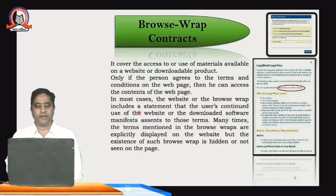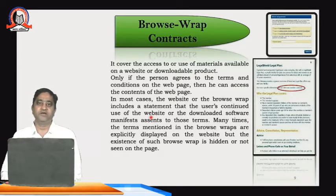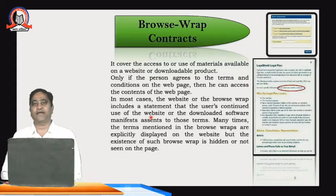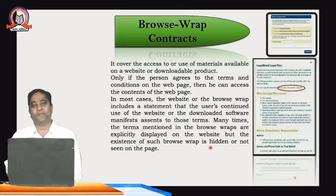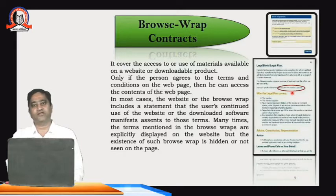In most cases, the browse wrap agreement includes a statement that the user's continued use of the website or downloading of the software manifests assent to those terms — meaning the user has already said yes. Sometimes the buyer is not fully aware of the terms and conditions and simply clicks 'Agree' or 'I Accept'. The existence of the browse wrap agreement may be hidden or not easily visible on the page. Some terms are hidden and cannot be seen with the naked eye; the buyer must read carefully before accepting.